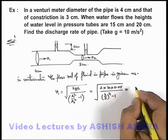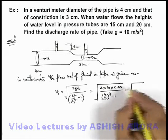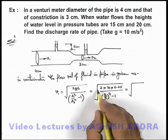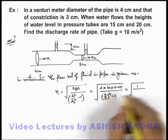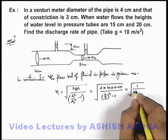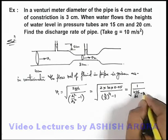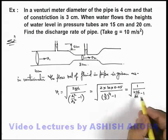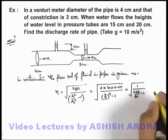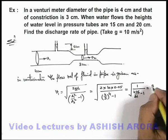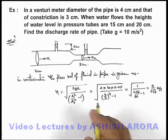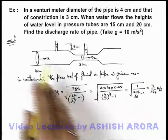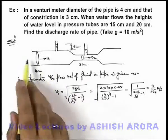And on substituting the values, we are getting it as root of the numerator, you can see it is 20 multiplied by 0.05 is 1, divided by it is 256 by 81 minus 1. And if we just simplify this expression, we'll get it 9 by 5 root 7 meters per second. That is the speed of liquid flow, water flow in the pipeline.